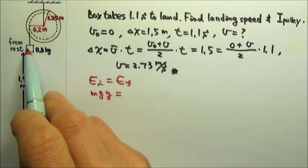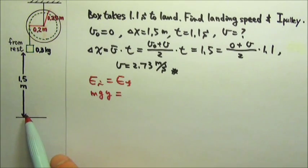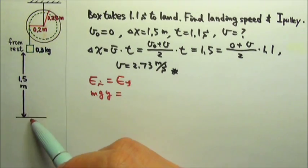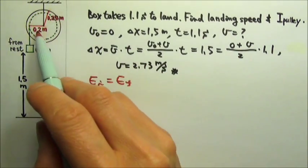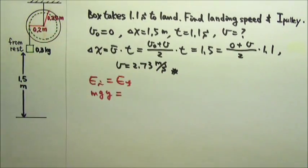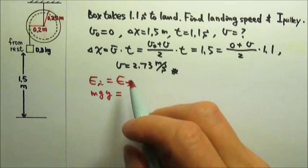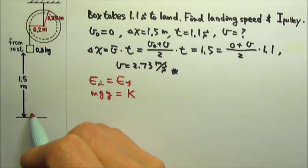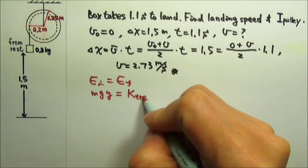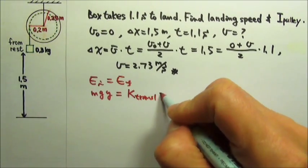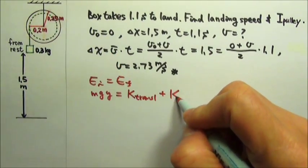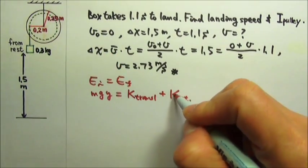And then at the end, the box is down here, no more MGY, but the box will be moving at this speed, and the pulley will be rotating. So in the end, we have kinetic energy. Since the box does translational motion, there is the translational kinetic energy of the box. And the pulley does rotational motion, so we have the rotational kinetic energy of the pulley.